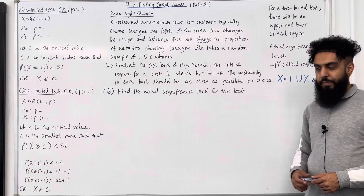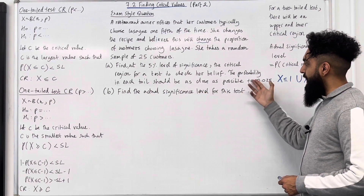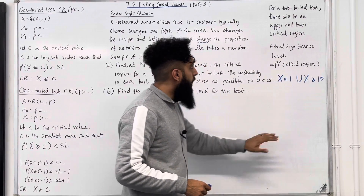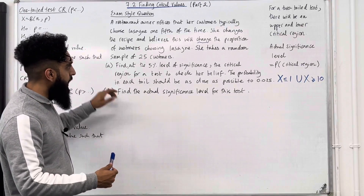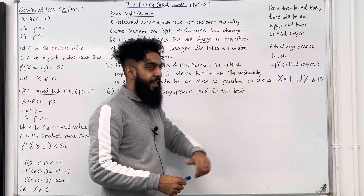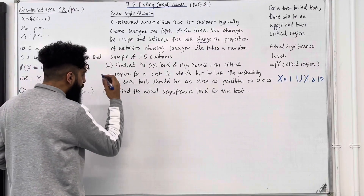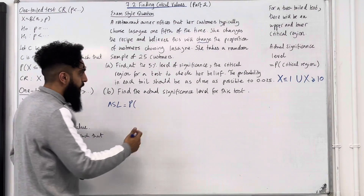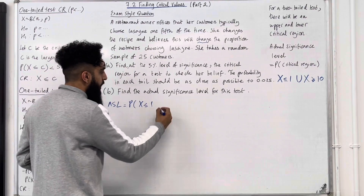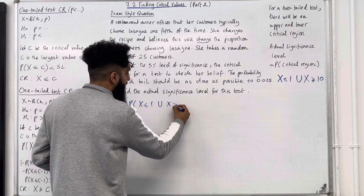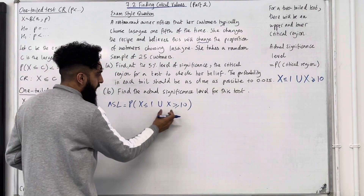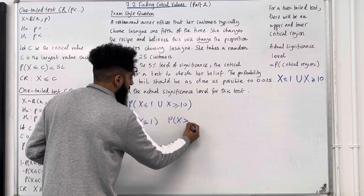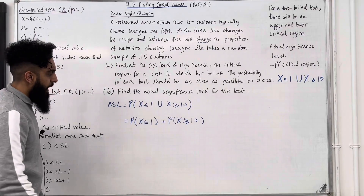For Part B, we find the actual significance level. The actual significance level equals the probability of the critical region: P(X ≤ 1 or X ≥ 10). These two events are mutually exclusive, so we calculate each probability separately and add them together. Since we have less than or equal to, we can use the binomial CD function directly for the first part.